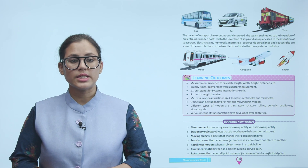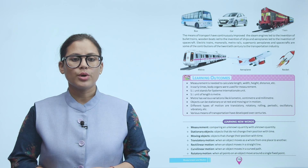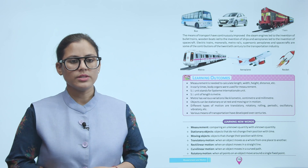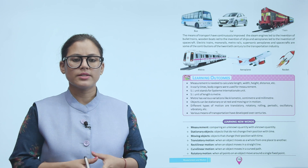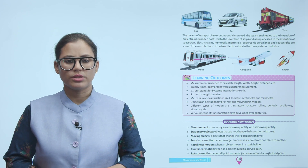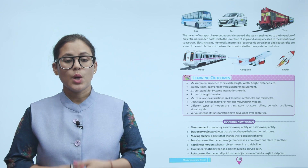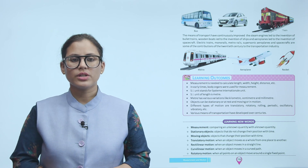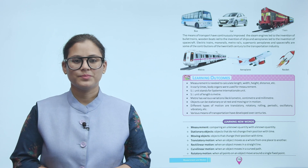Learning outcomes: Measurement is needed to calculate length, width, height, distance, etc. In early times, body organs were used for measurement. SI unit stands for Système International (International System of Units). The SI unit of length is meter, which has variations like kilometer, centimeter, and millimeter. Objects can be stationary or at rest, or moving or in motion. Different types of motion are translatory, rotatory, rolling, periodic, oscillatory, vibratory, etc. Various means of transportation have developed over centuries. I hope you understand this chapter — practice it on your own.